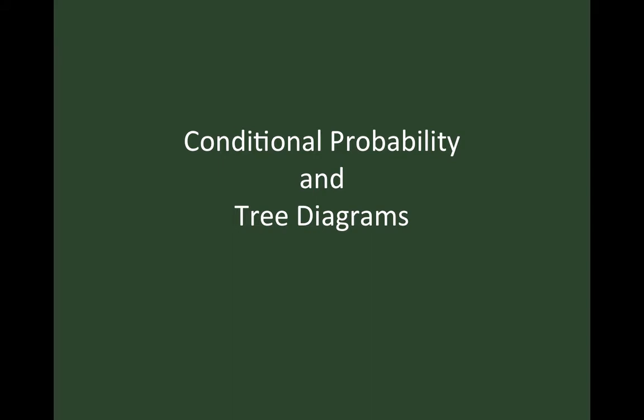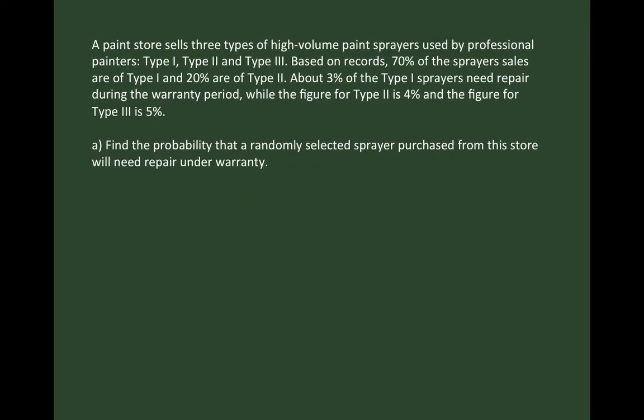In this video, I'm going to demonstrate how to calculate a conditional probability using a tree diagram. Here's the problem: a paint store sells three types of high-volume paint sprayers used by professional painters — Type 1, Type 2, and Type 3. Based on records, 70% of sprayer sales are Type 1 and 20% are Type 2. About 3% of Type 1 sprayers need repair during the warranty period, while the figure for Type 2 is 4% and for Type 3 is 5%. The first probability we're going to calculate is the probability that a randomly selected sprayer purchased from this store will need repair under warranty.